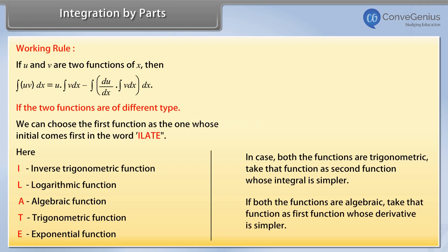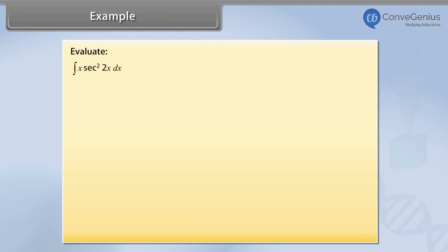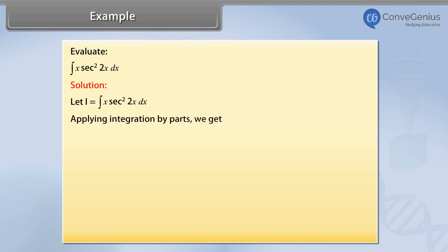Example: Evaluate the integral of x into sec squared 2x with respect to x. Solution: Let I equal the integral of x into sec squared 2x with respect to x. Applying integration by parts, we get I equal to x into the integral of sec squared 2x minus the integral of the differential of x into the integral of sec squared 2x.